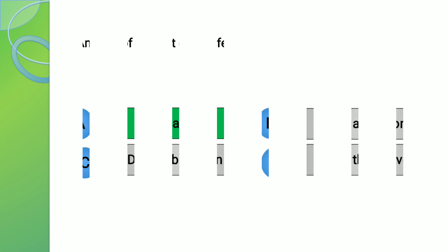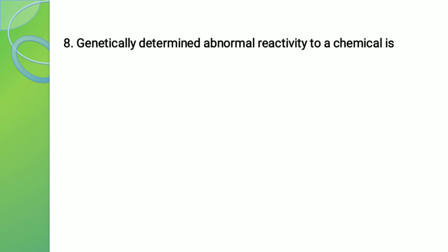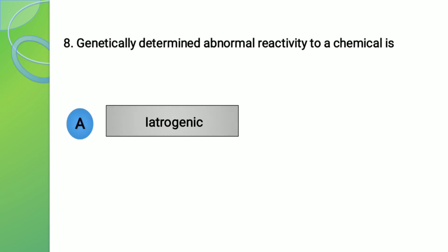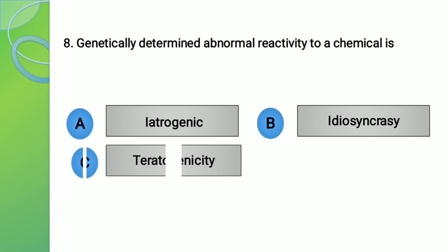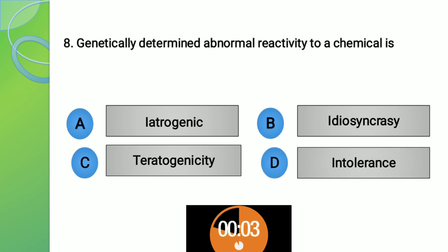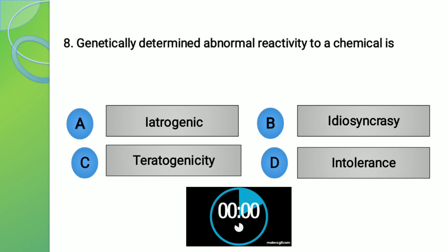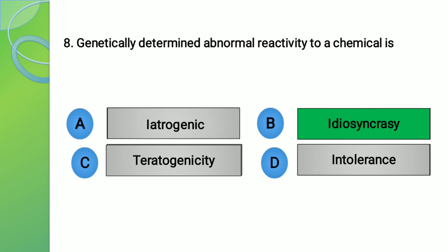Moving to question number 8. The question is: genetically determined abnormal reactivity to a chemical is? The options are: A - Iatrogenic, B - Idiosyncrasy, C - Teratogenicity, and D - Intolerance. The right answer is option number B, that is idiosyncrasy — genetically determined abnormal reactivity to a chemical.